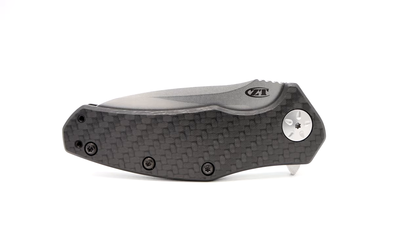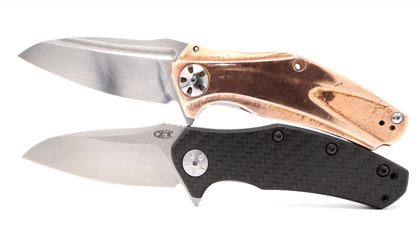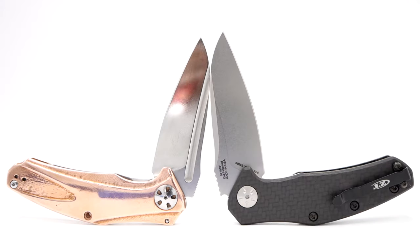And I believe it's the same argument as the Gen 5 XM18 versus the ball bearing 0562. Except for here, in this case, ZT is the one stuck in the stone age.